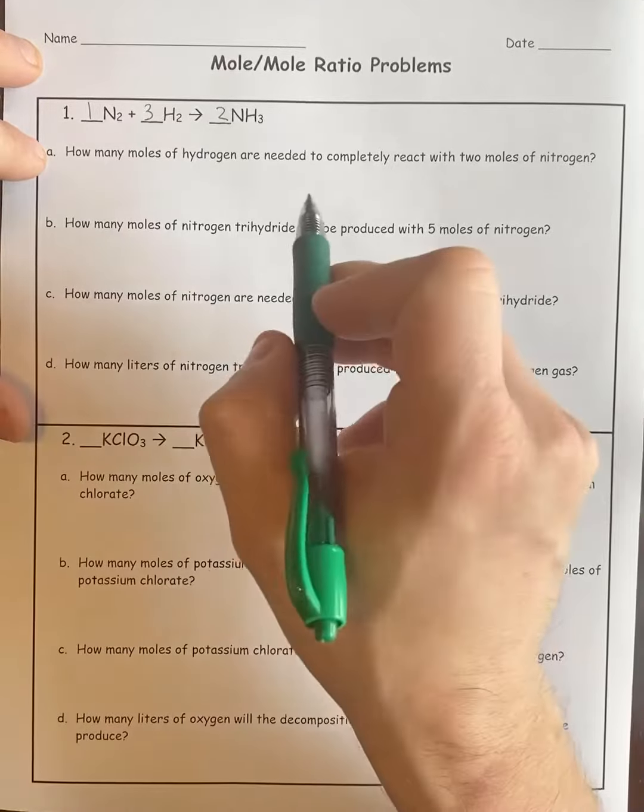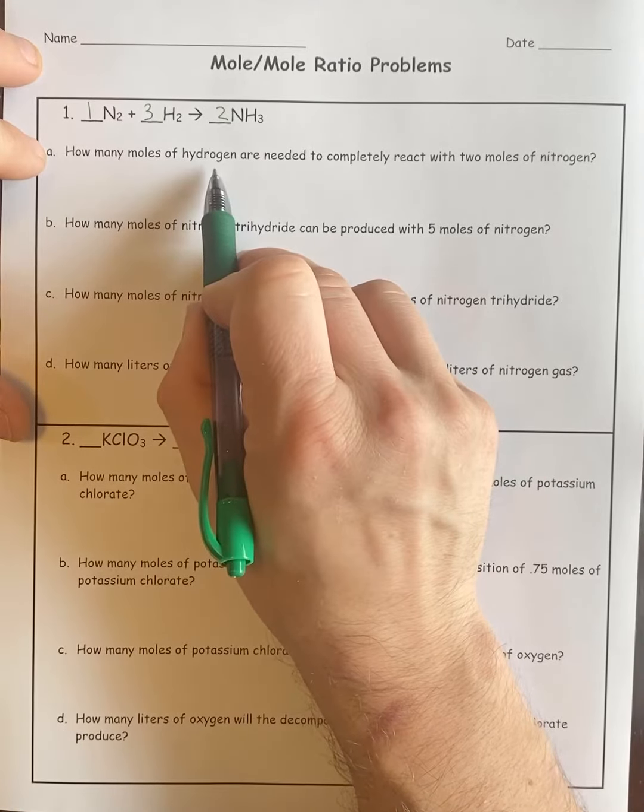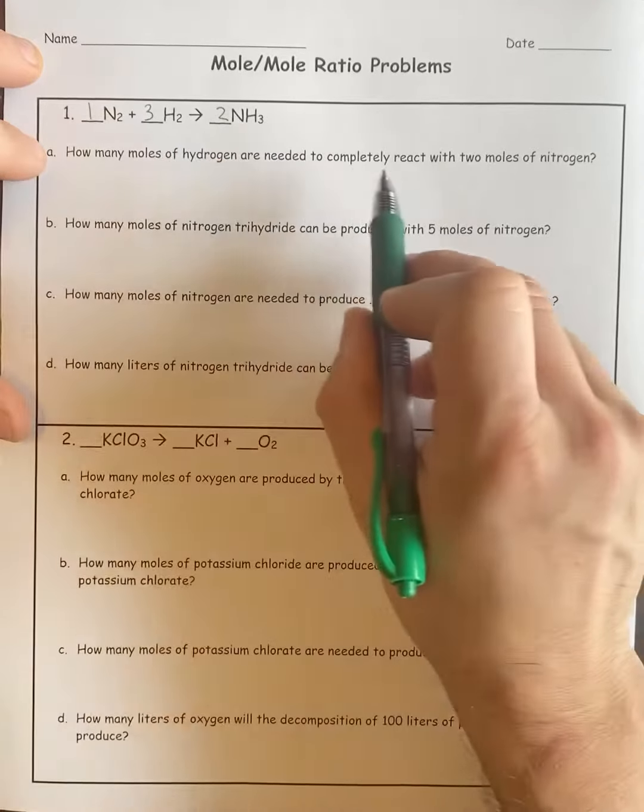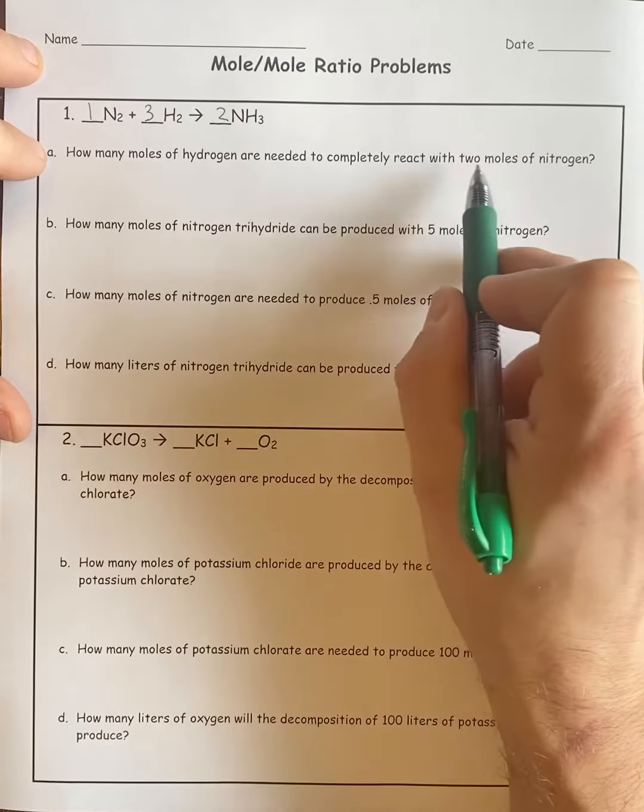For this, they want hydrogen, so I would go X over 3, and then 2 moles of nitrogen, so 2 over 1.